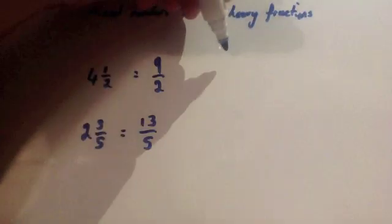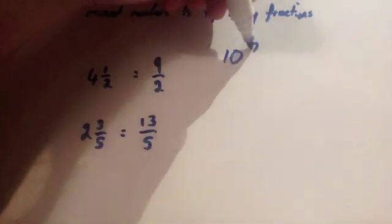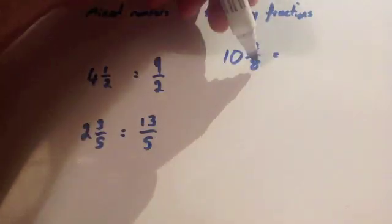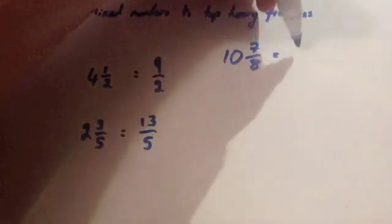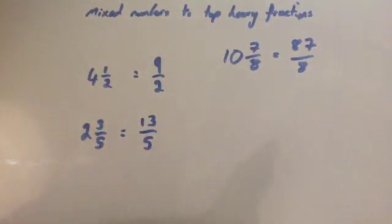One last one: if you had 10 7/8, you do 10 times 8 which is 80, plus 7 is 87 over 8. And as I said, this is just really useful for whenever you're going to do calculations with fractions or mixed numbers.